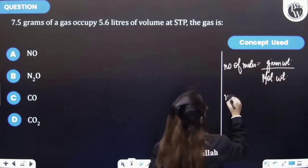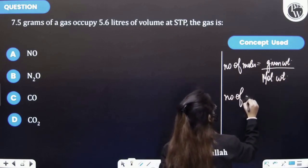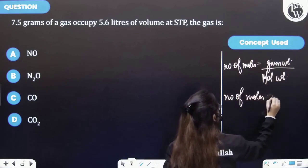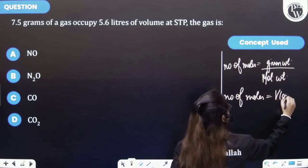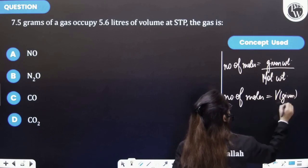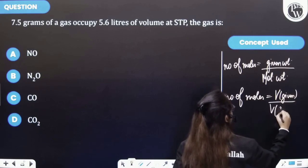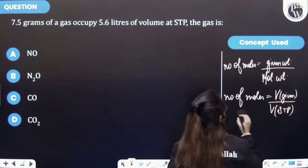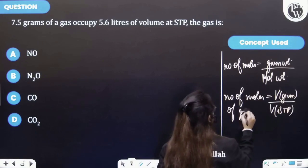Also, number of moles equals volume that is given to you divided by volume at STP. This is for the number of moles of gases, and that too at STP.